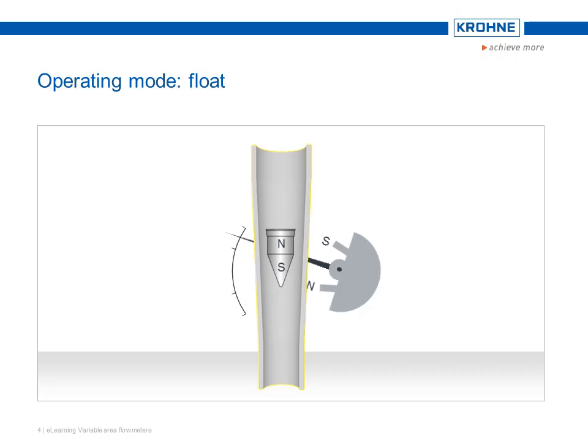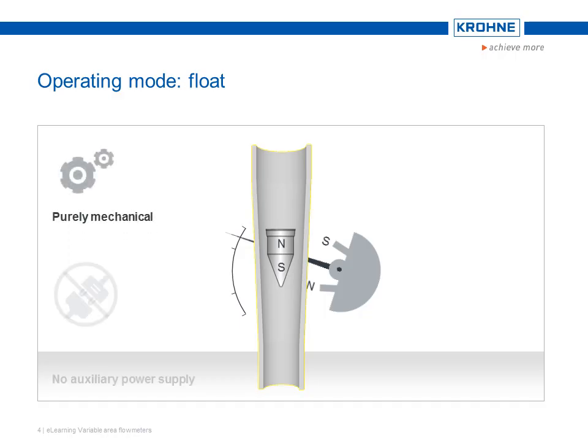Once again, no auxiliary power supplies are required. The operating mode of a variable area flow meter to measure and display flow is purely mechanical and without auxiliary electrical power. This is an important unique selling point for variable area flow meters.